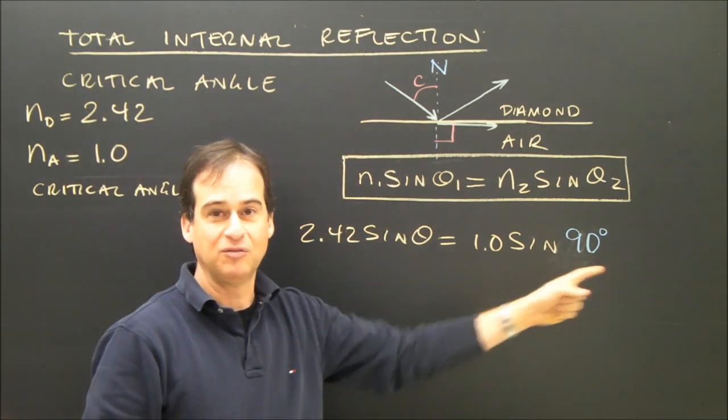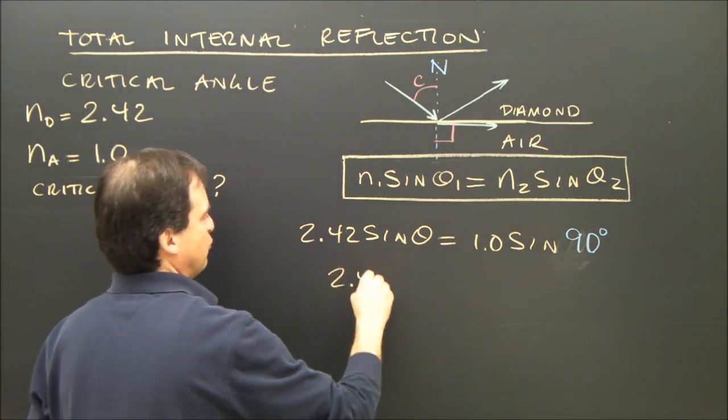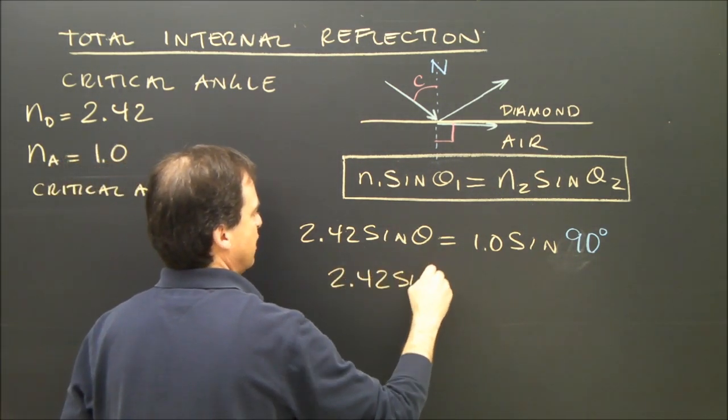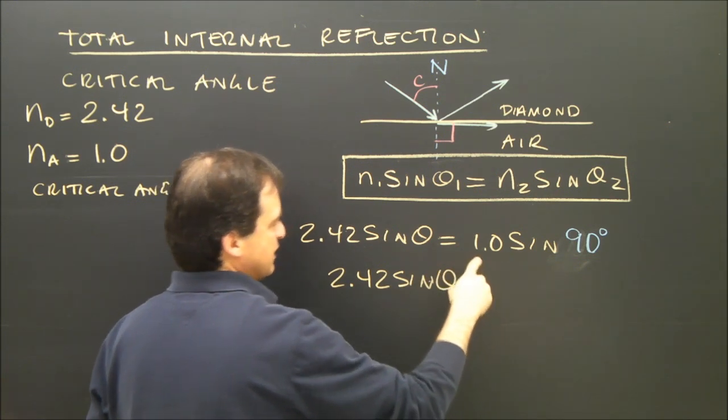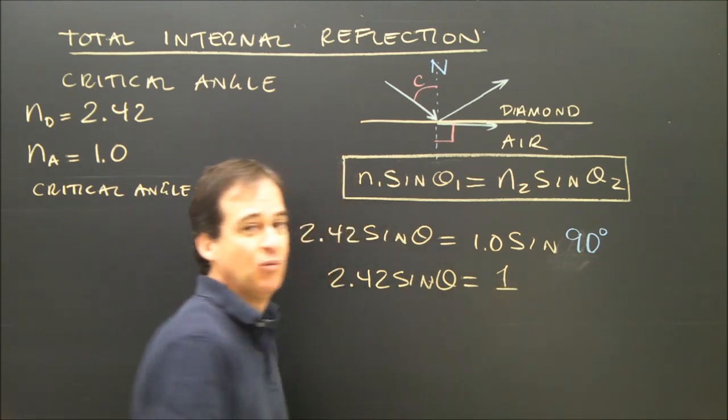The sine of 90, when you plug it in your calculator, is 1. So I've got 2.42 sine of the angle I'm looking for, is equal to 1 times the sine of 90, which is 1, so that works out nice, works out to be 1.